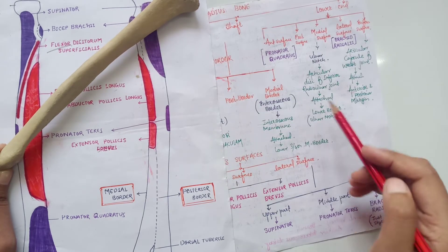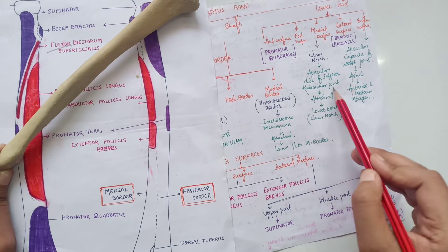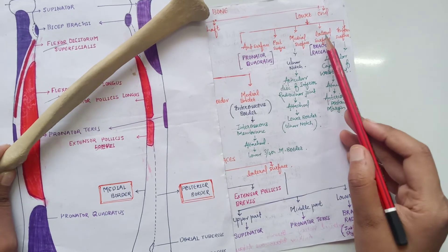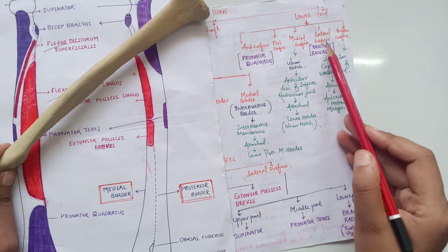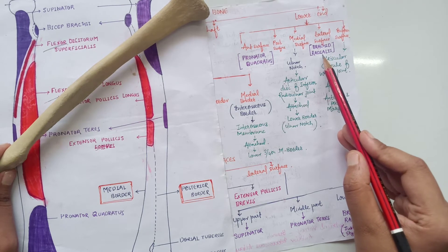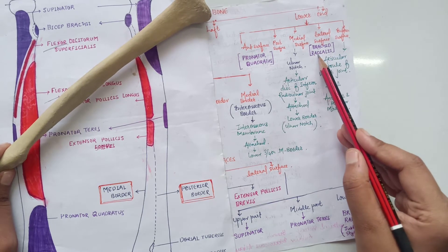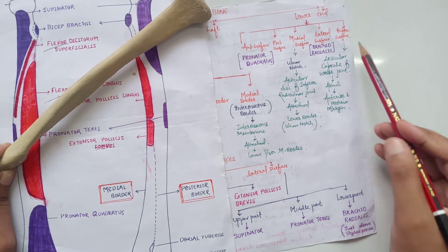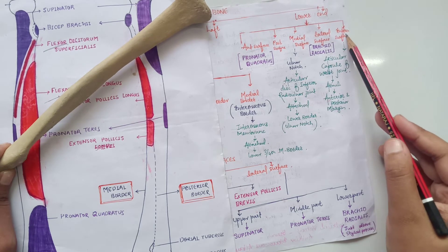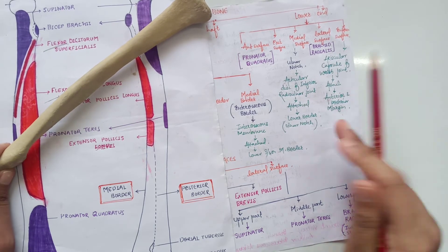The ulnar notch is present on the medial surface. The articular disc of the inferior radioulnar joint is formed here. On the lateral surface, just above the styloid process, brachioradialis has its insertion. On the inferior surface, the articular capsule of the wrist joint is present.